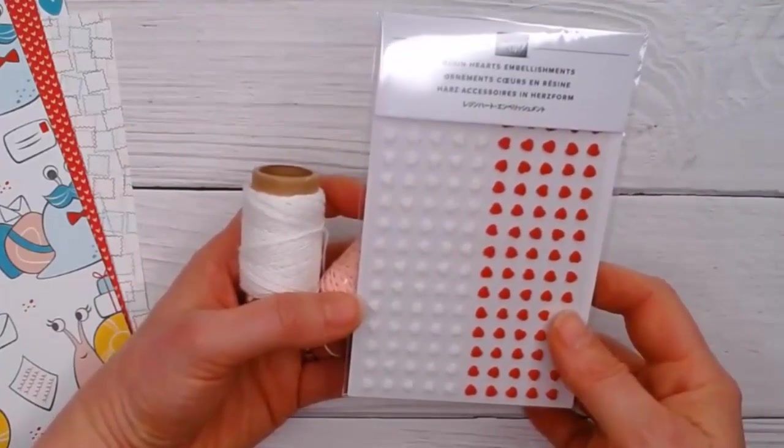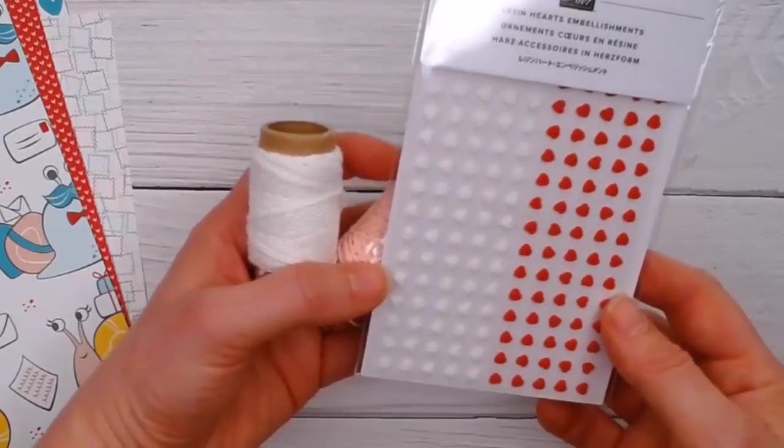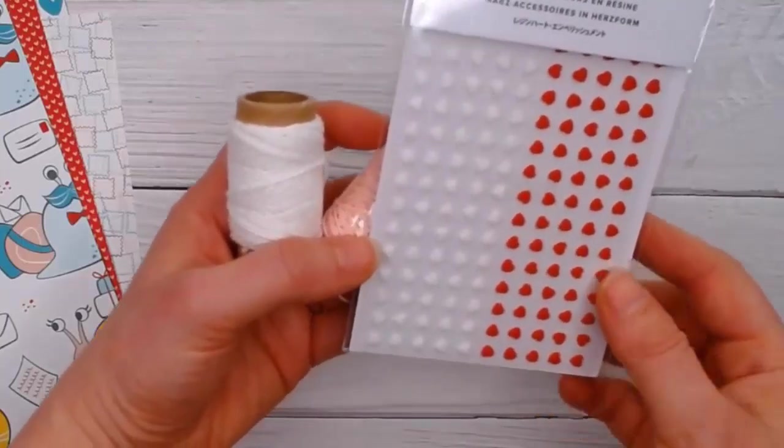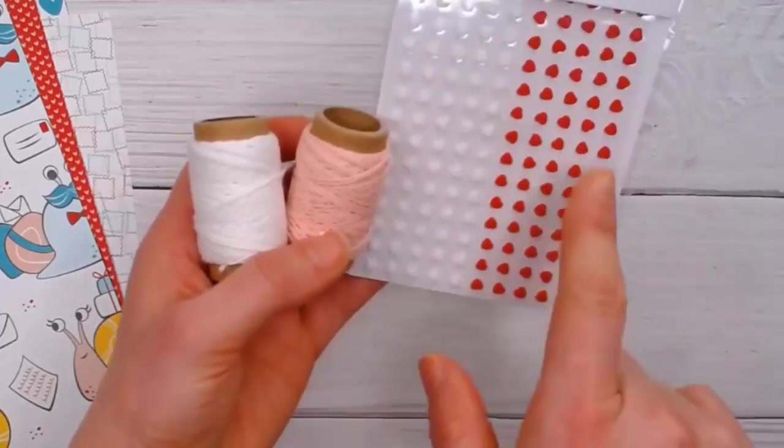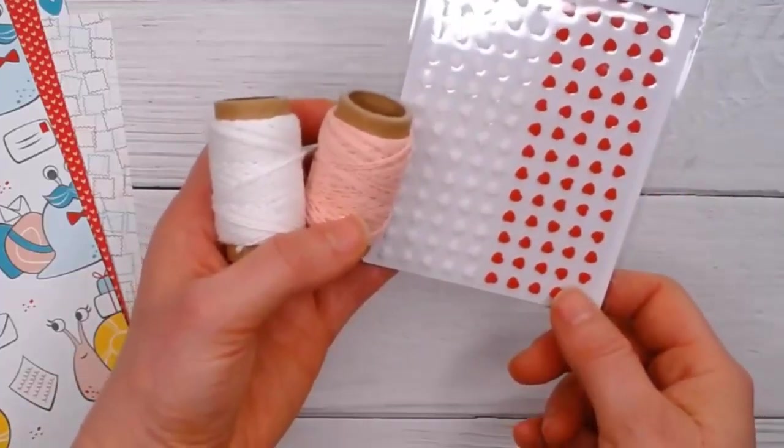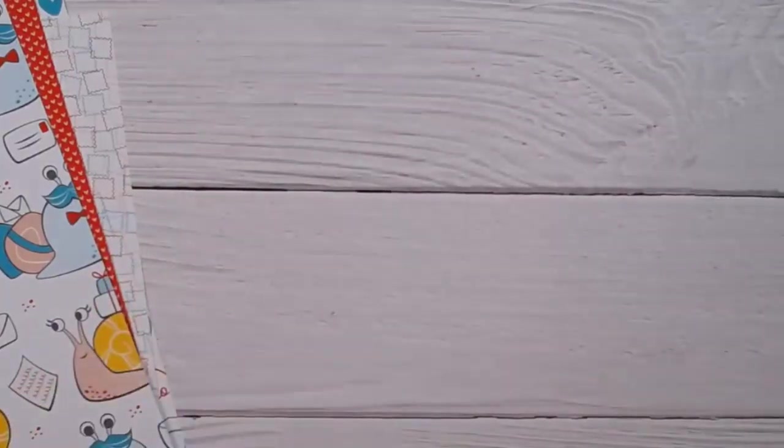Then you have these really adorable tiny little resin hearts. They are very small but they're just absolutely adorable and they come in white and in the red, and these can be mixed in really easily with any of the other suites as well.